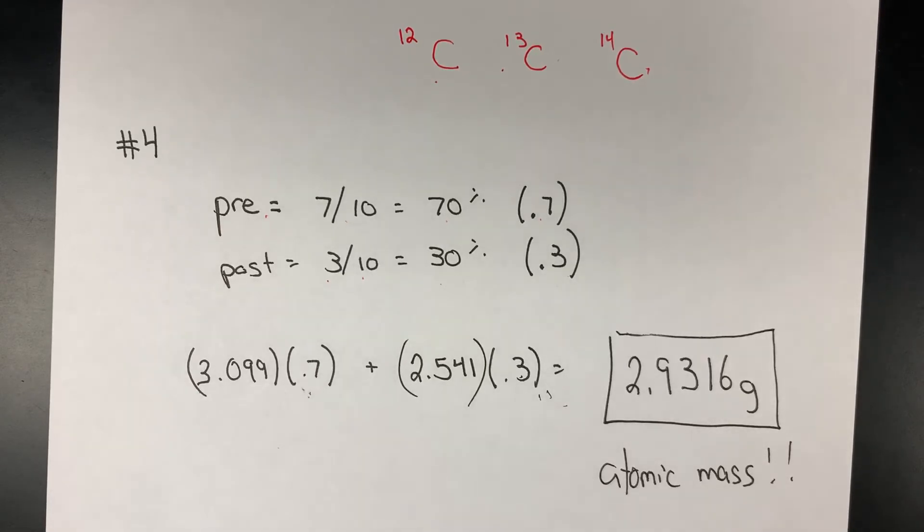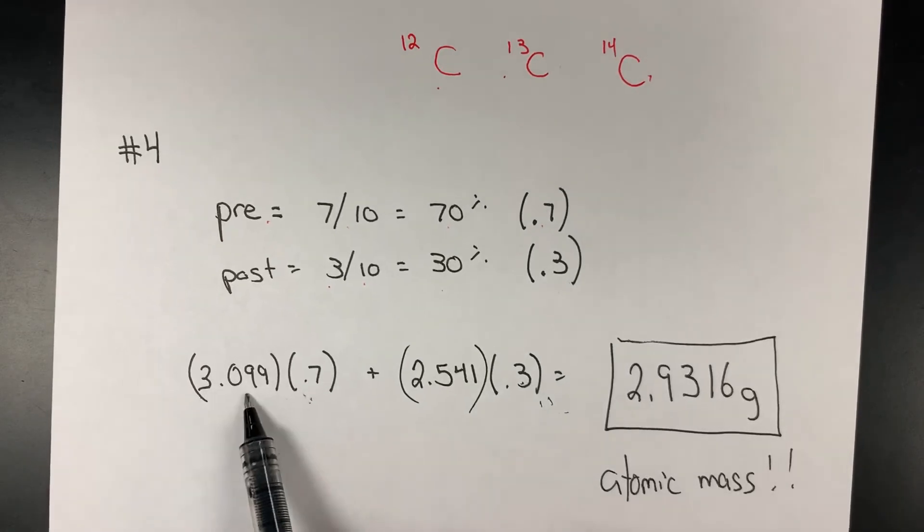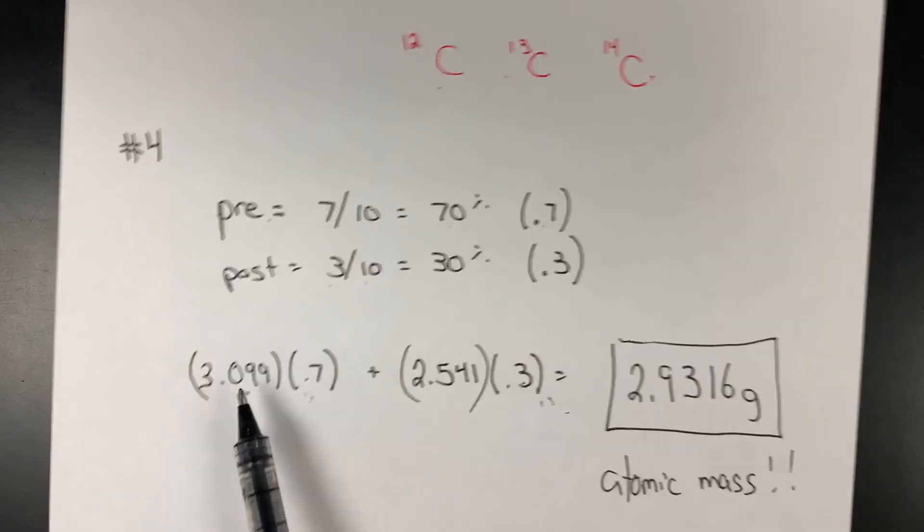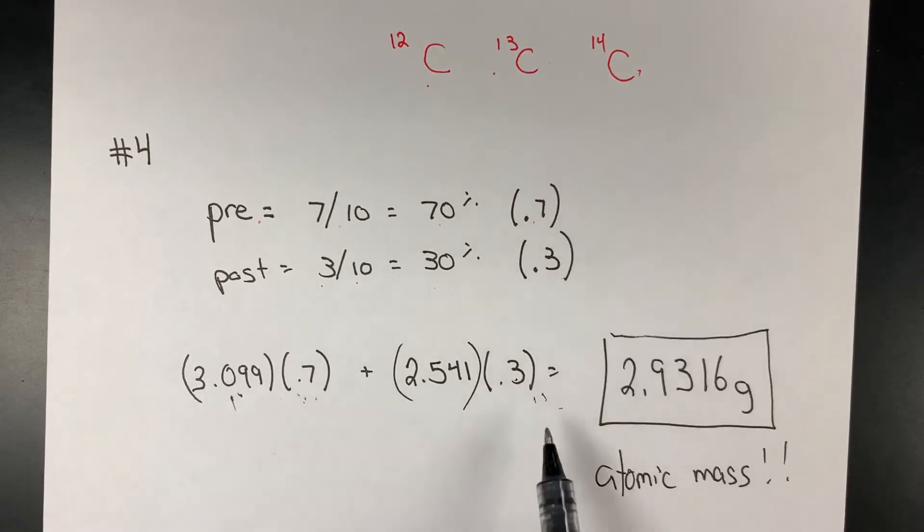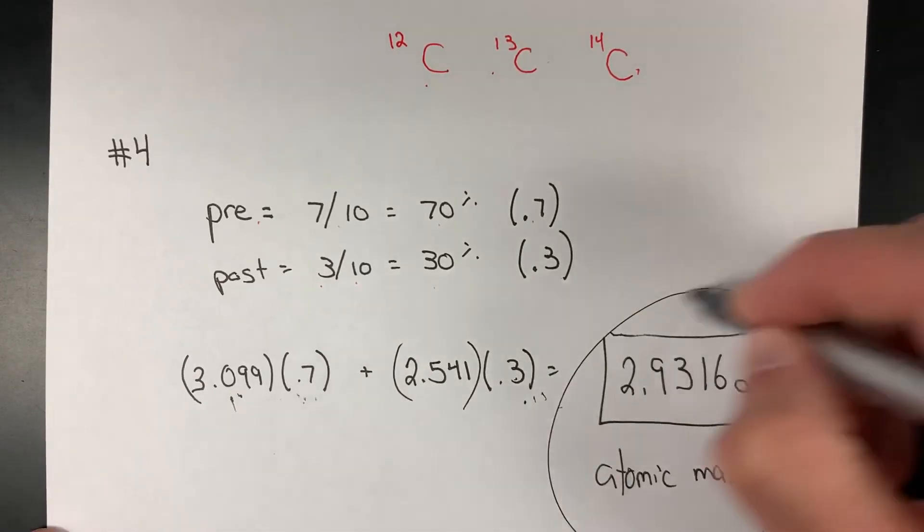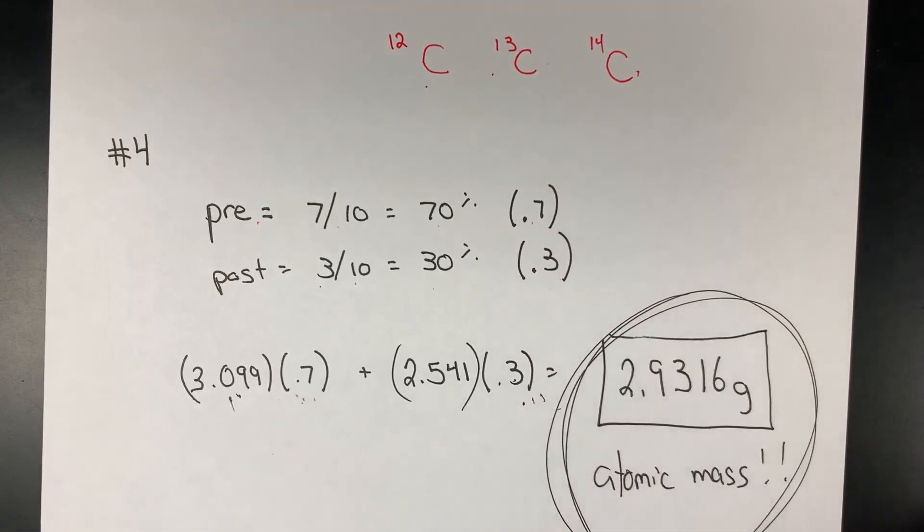Using my specific data for this example, I take the mass of the pre multiplied by 0.7, plus the mass of the post multiplied by 0.3, and I arrive at the atomic mass of 2.93.